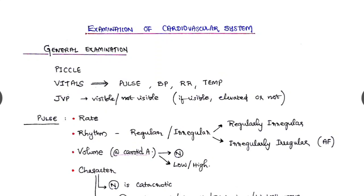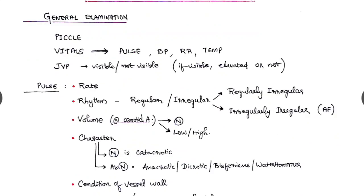Jugular venous pulsation, whether it is visible or not visible, and if it is visible whether it is elevated or not, that we have to mention. Pulse we have to define, we have to tell its rate and the rhythm.